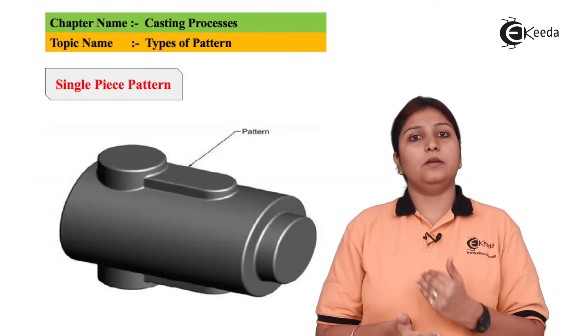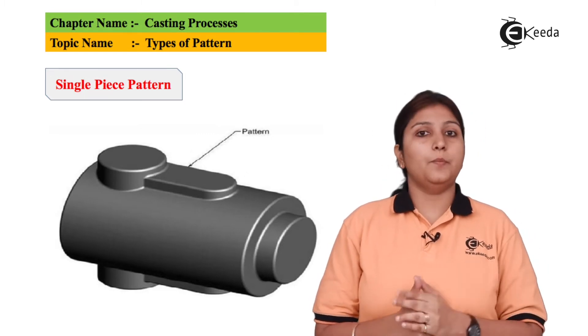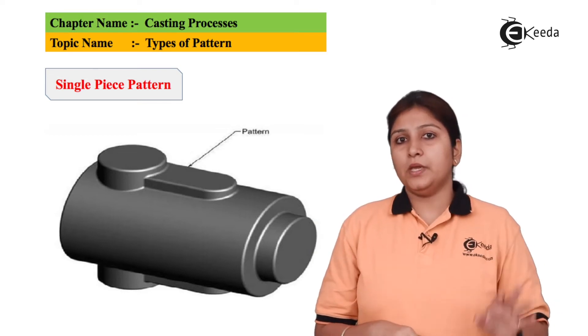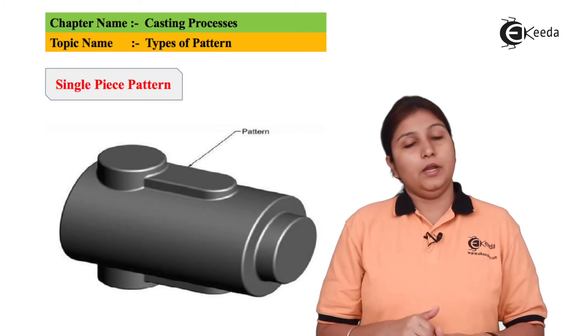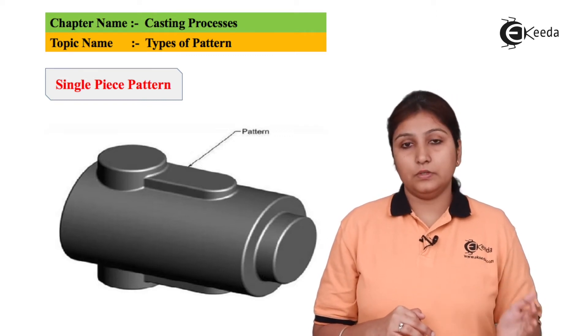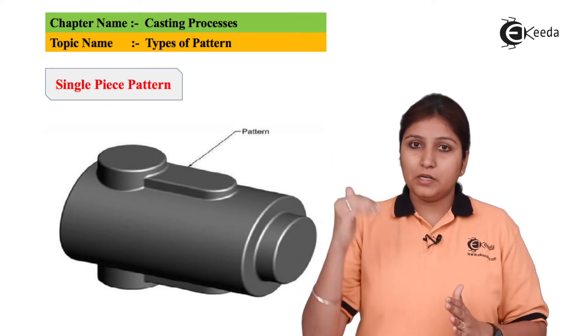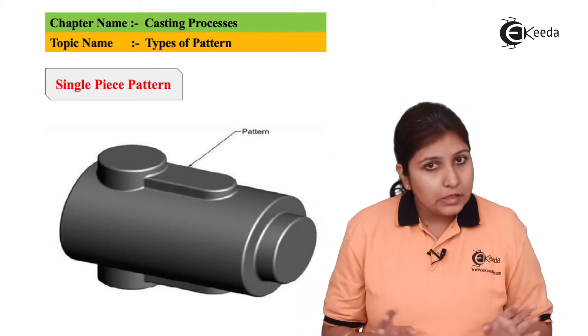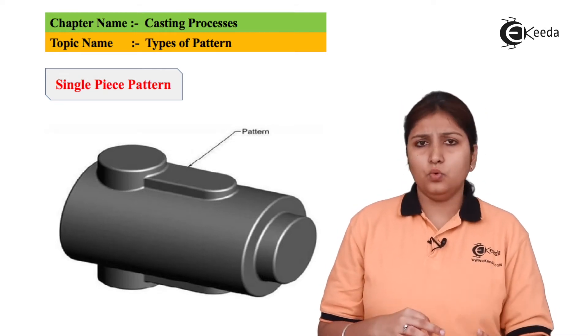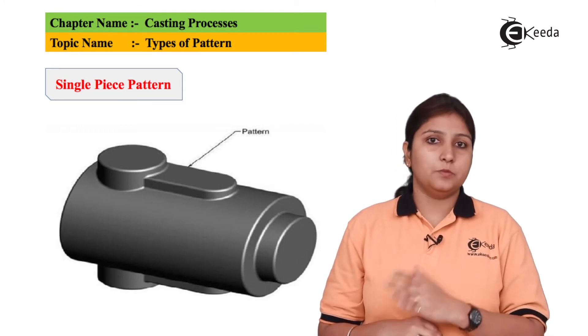So now this pattern is known as single piece pattern. In a single piece pattern what happens is the molten material directly enters the pattern. It fills the space and for the entrance it requires different gating system, different components in a gating system, different material in a gating system like the sprue, pouring basin etc. So the material enters, it fills the cavity and it is set for some time or it is cooled according to the requirement. And finally your object is made. This is a single piece pattern.